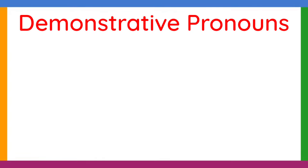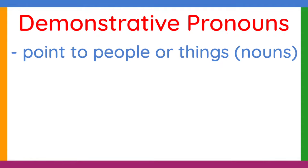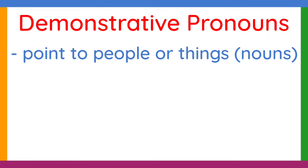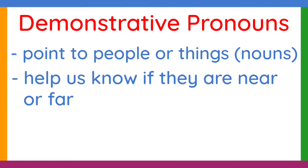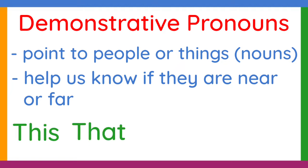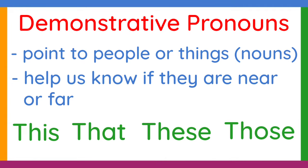What are demonstrative pronouns? Demonstrative pronouns are used to point to people or things. They help us know if the people or things are near or far from us. These pronouns include this, that, these, and those.